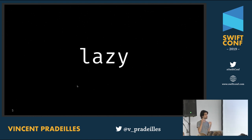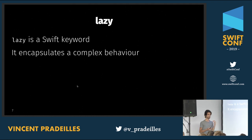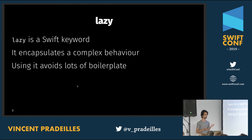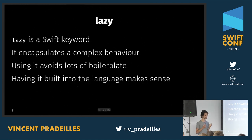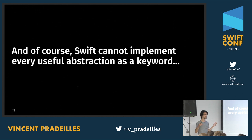So we have two keywords that offer very different levels of abstraction. `lazy` is a Swift keyword just like `var`, but it encapsulates a complex behavior and helps us avoid a lot of boilerplate code. In Objective-C, writing lazy loading by hand was verbose and error-prone. However, lazy loading is definitely not the only useful abstraction for developers — there are many other abstractions we'd like to have built into the language.